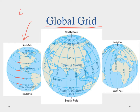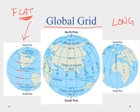One way to remember: lines of latitude lie flat — they lay flat with the equator. The other thing we need are longitude lines. All of our longitude lines are the same length — they're all long, just like each other. They go from the north pole to the south pole, and we have a starting line called the prime meridian. Longitude measures how far east or west from the prime meridian. Because there are 360 degrees, we have 180 degrees east and 180 degrees west, and that opposite line is called the international date line.